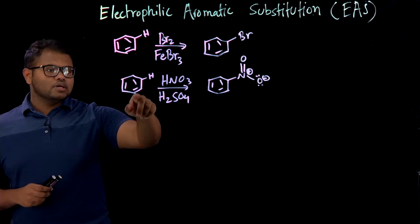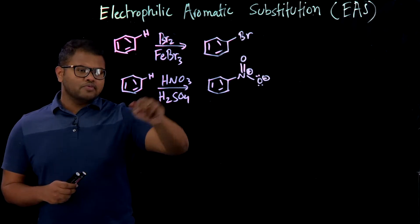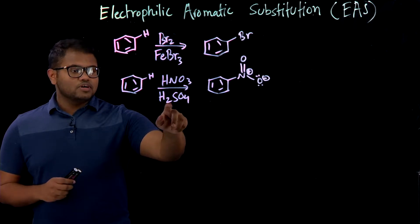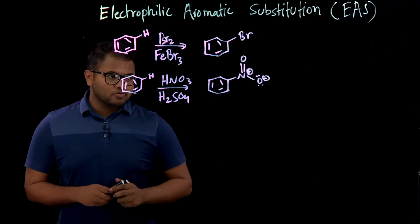A second example is another benzene ring. If you react it with HNO3, which is nitric acid, with H2SO4 sulfuric acid, you get a nitrate group on it.